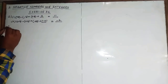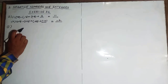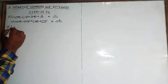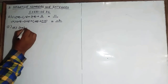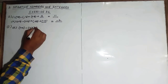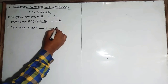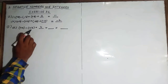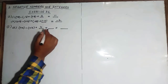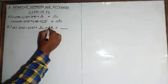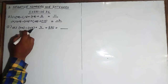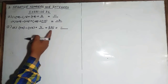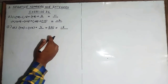Question number two: rewrite each sentence as an addition sentence and find the answer. Third part is +10 minus plus 16 equals dash plus dash equals dash. You have to write in the form of addition. So plus 10 as it is, and you will add minus 16 because plus into minus gives minus. Negative number is greater so minus sign will come: minus 16 plus 10, so minus 6 will be your answer.